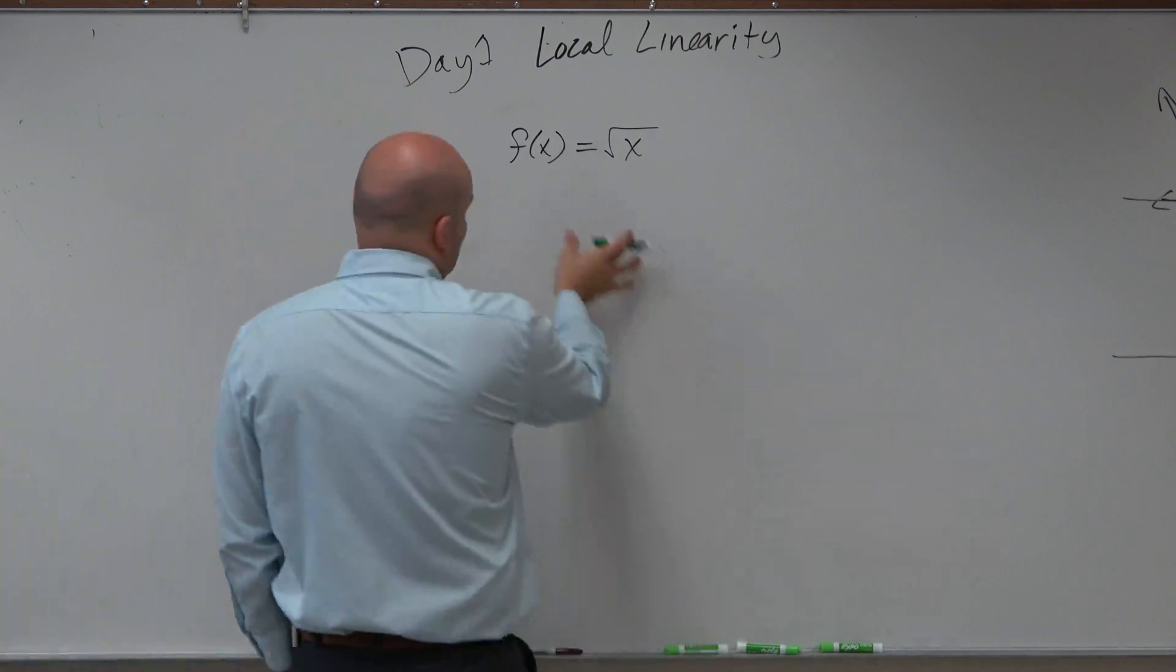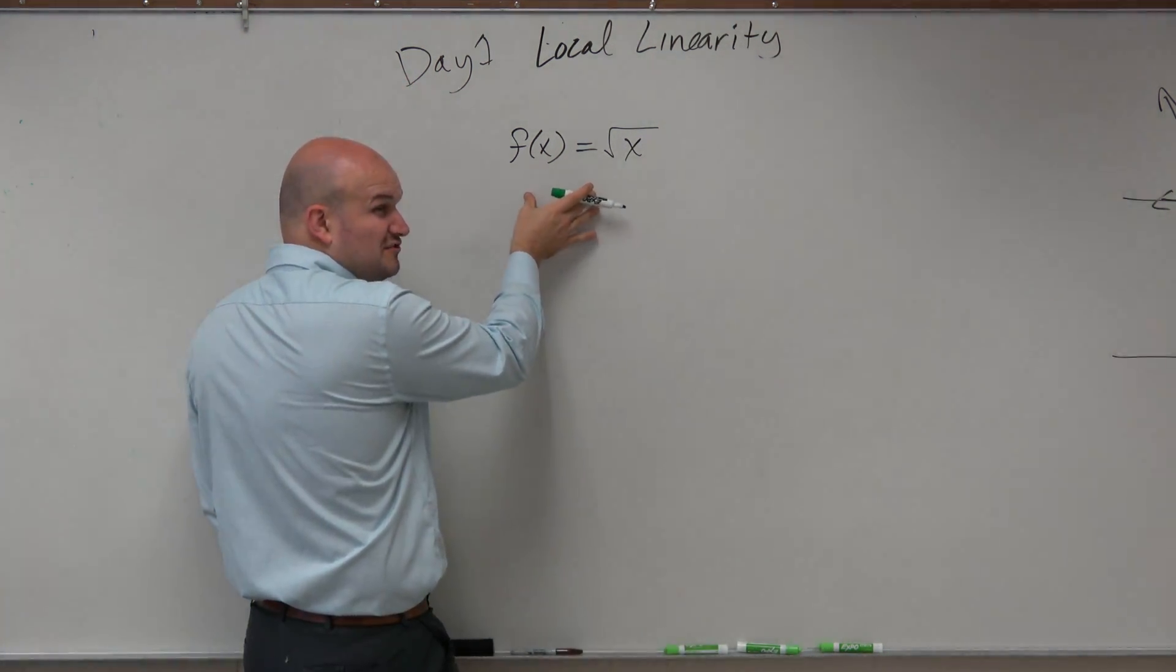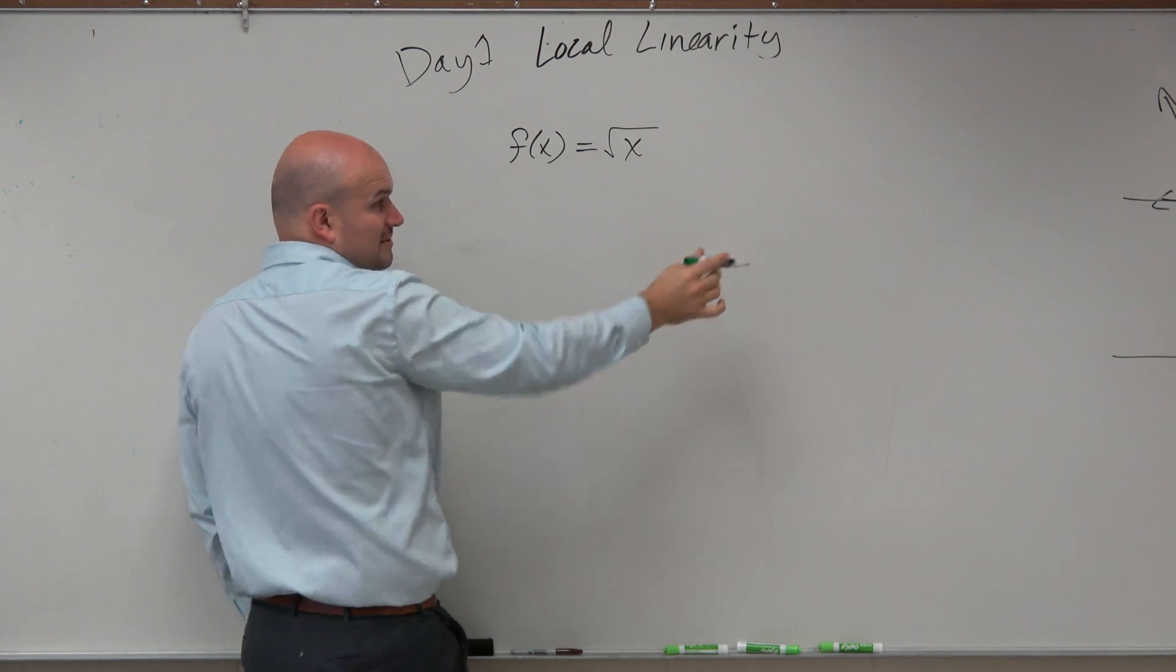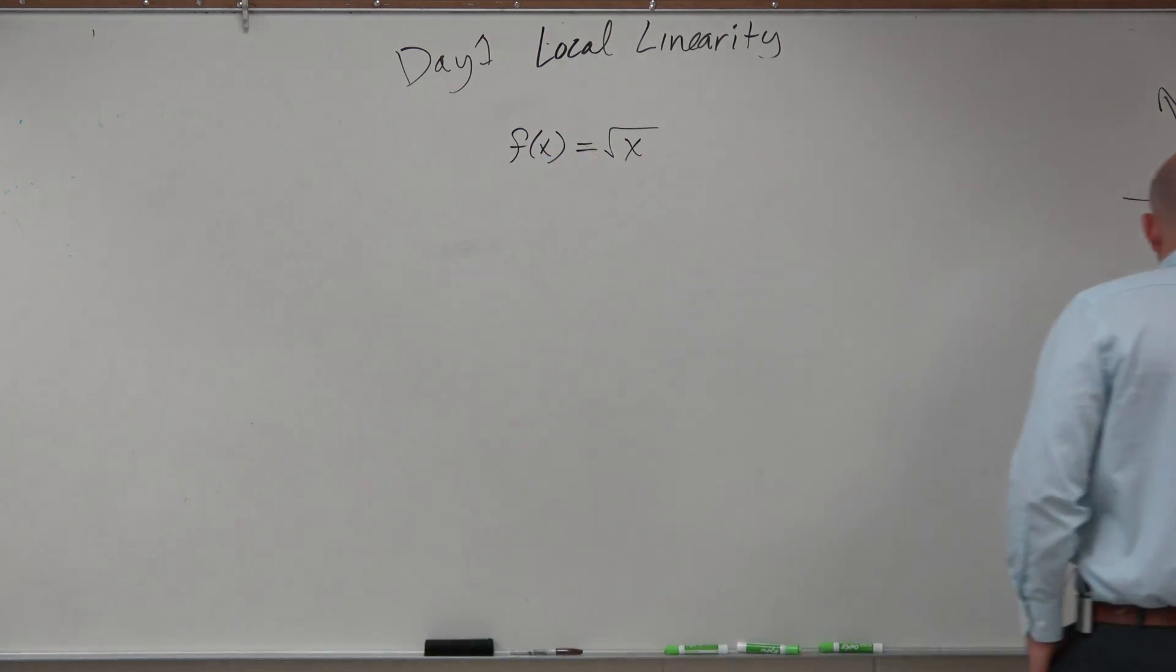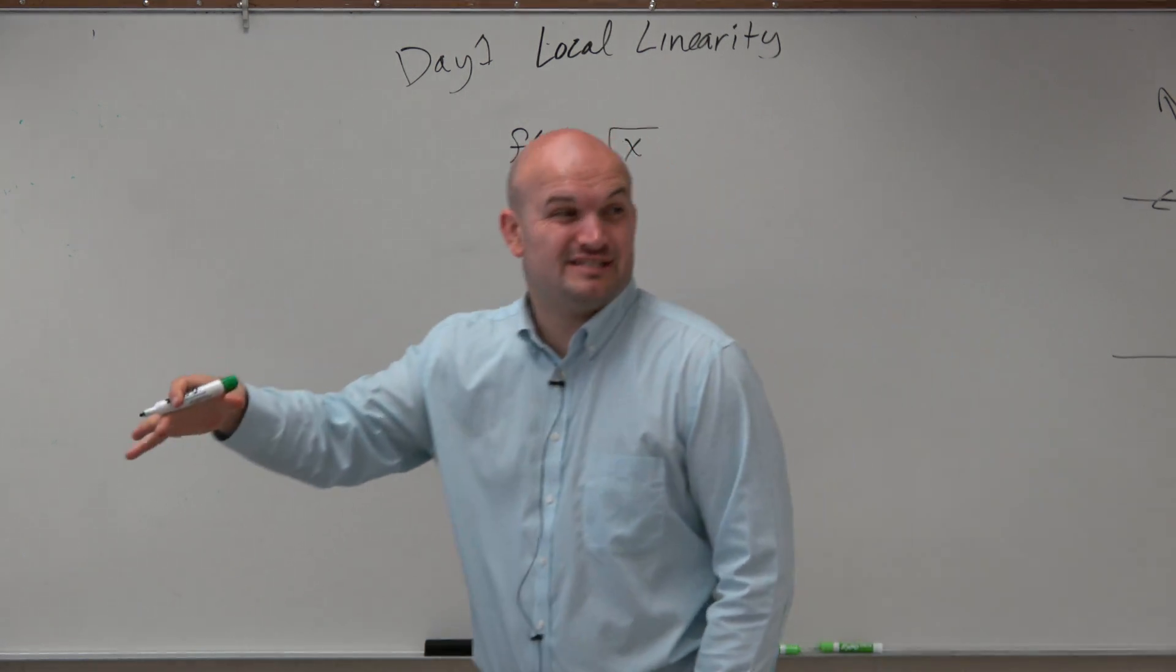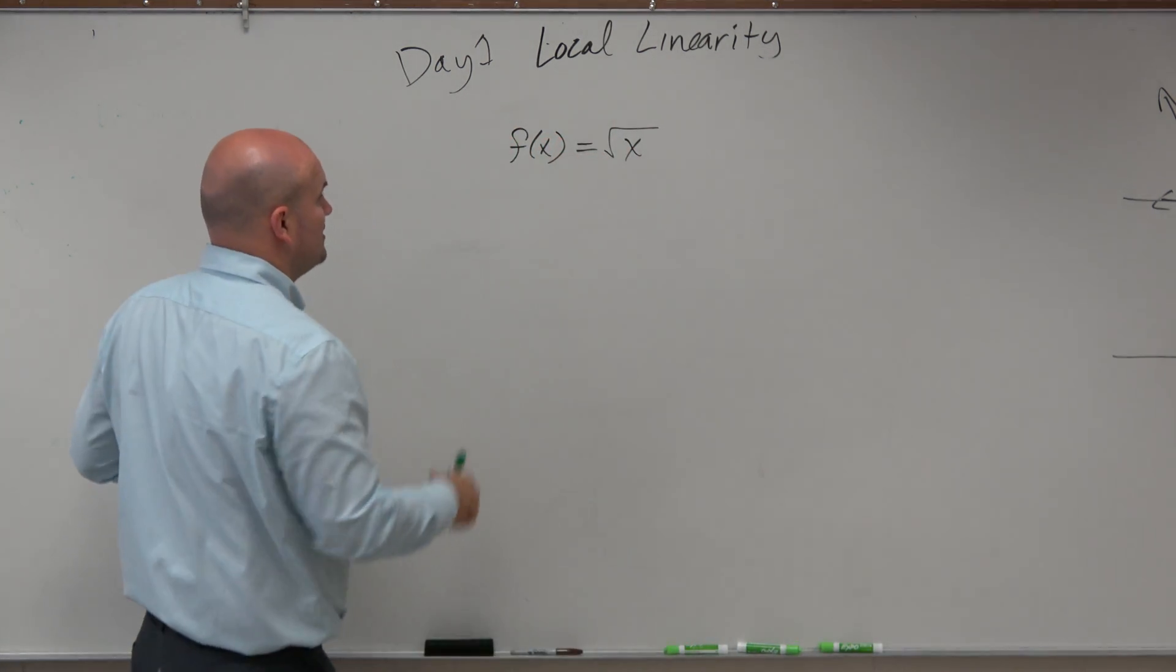So again, if we want to find the line of local linearity for this equation for any point on this graph, we have something like that. And we do know that the slope is changing, right? It looks like it's actually decreasing as we get further and further to the right.